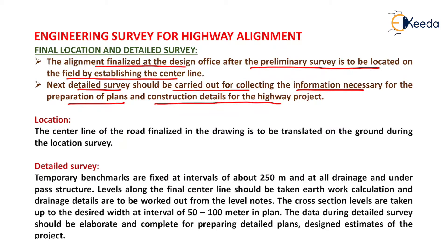A DPR — detailed project report — is prepared at the end of the survey. The centerline of the road finalized in the drawing is to be translated or transferred to the ground during the location survey. In the detailed survey, temporary benchmarks are fixed at intervals of about 250 meters and at all drainage and underpass structures.